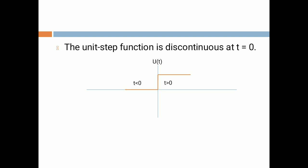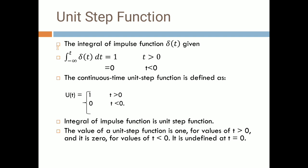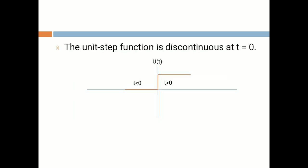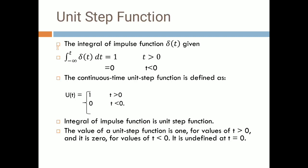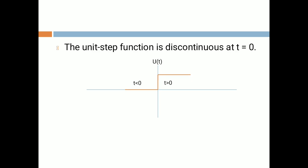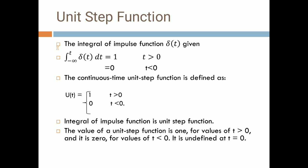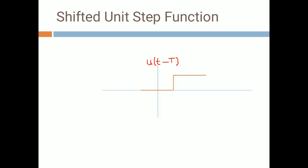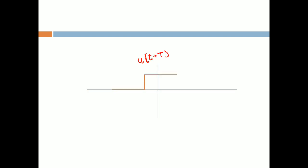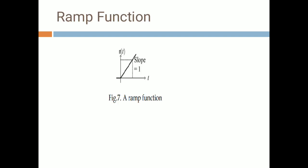In the diagram, when t > 0 the signal u(t) = 1, and when t ≤ 0 the signal is 0, as indicated by the orange color along the zero axis. That is the unit step function. For the shifted unit step function: u(t − t₀) shifts to the right, and u(t + t₀) shifts to the left.